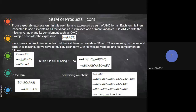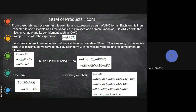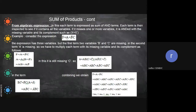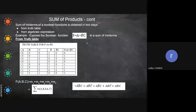In this slide, each term is expressed as a sum of AND terms. Each term is inspected to see if it contains all the variables. If it misses one or more variables, the missing variable is added using the identity x + x̄ = 1. Let us take the example f = a + b̄c. This expression has three variables, but the first term 'a' is missing both b and c.